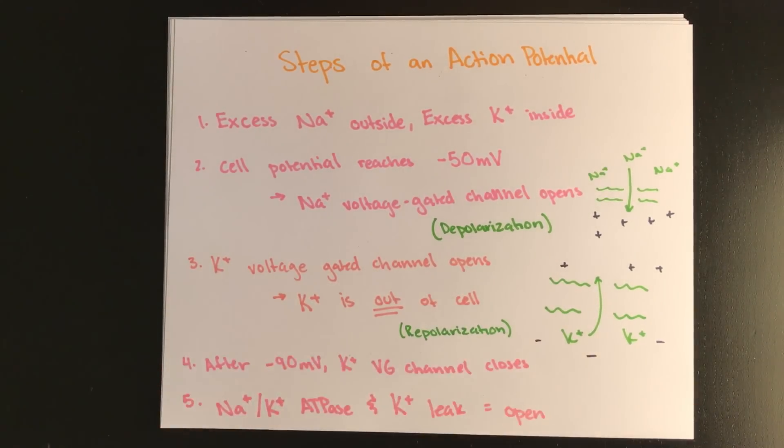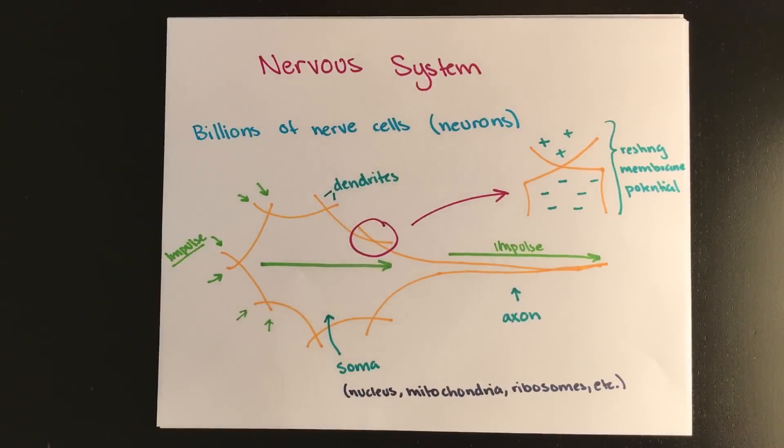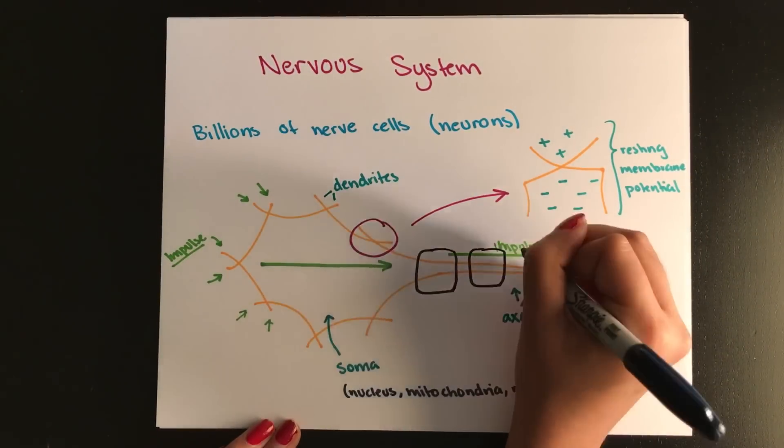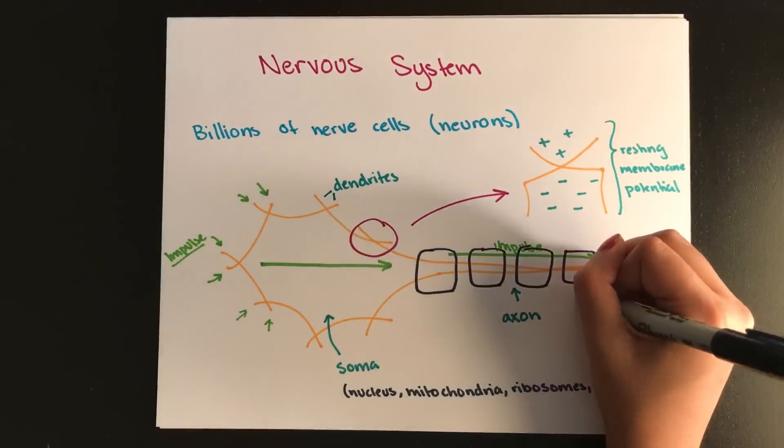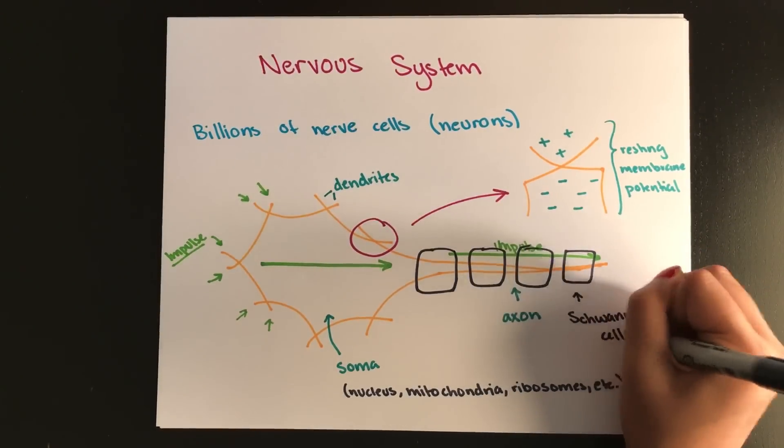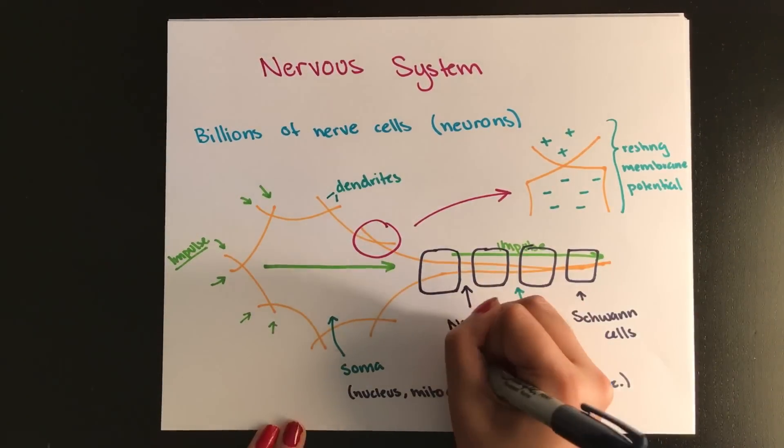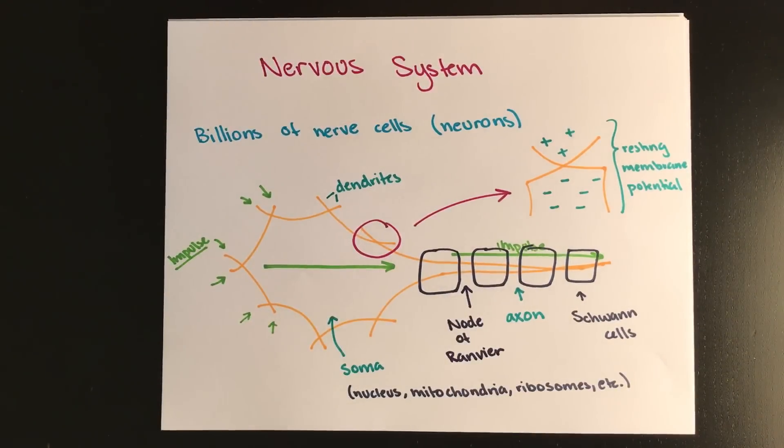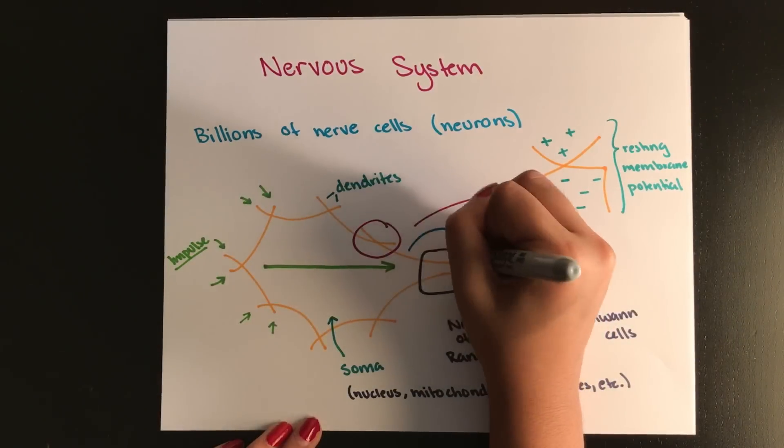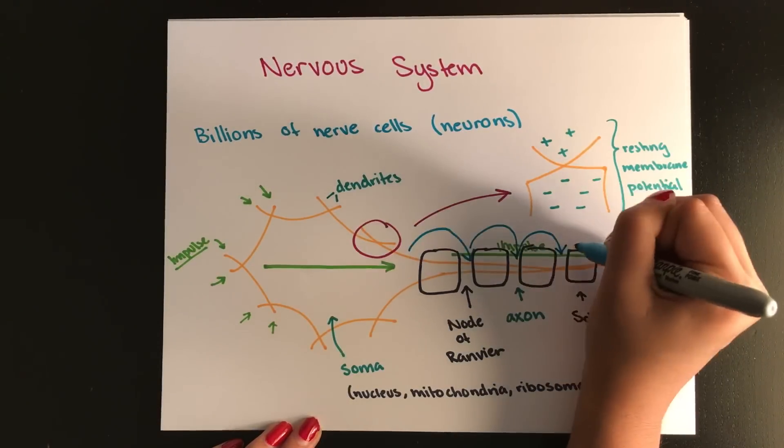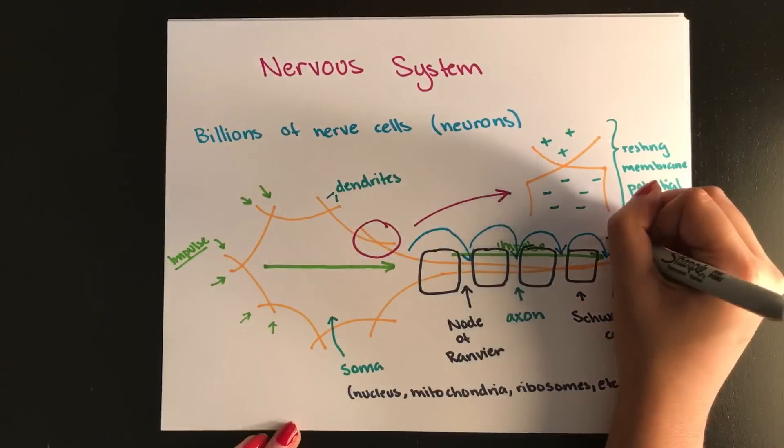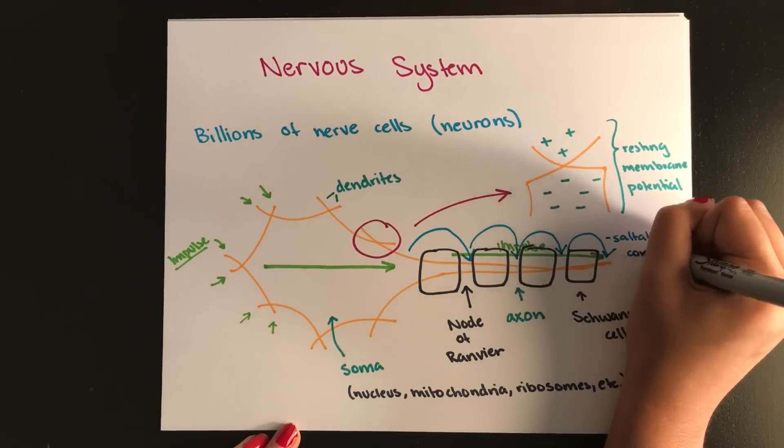Some neurons are wrapped in Schwann cells. And these are also called myelin sheaths. And the spaces between each Schwann cell is called a node of Ranvier. And these are actually really important terms because what this myelin sheath does is it'll increase how fast the impulse can be transferred. Because now instead of going down this long axon, you're actually just jumping from node of Ranvier to node of Ranvier. And this process from node to node is called saltatory conduction.